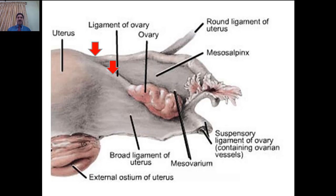The structures attached to the cornu of the uterus are important because they help in determination of a wet specimen in the dissection hall, where most students get confused. The arrangement of structures in a wet specimen is: in the middle lies the uterine tube; posterior inferior to the uterine tube is the ligament of the ovary; and anterior inferior to the uterine tube is the round ligament of the uterus.